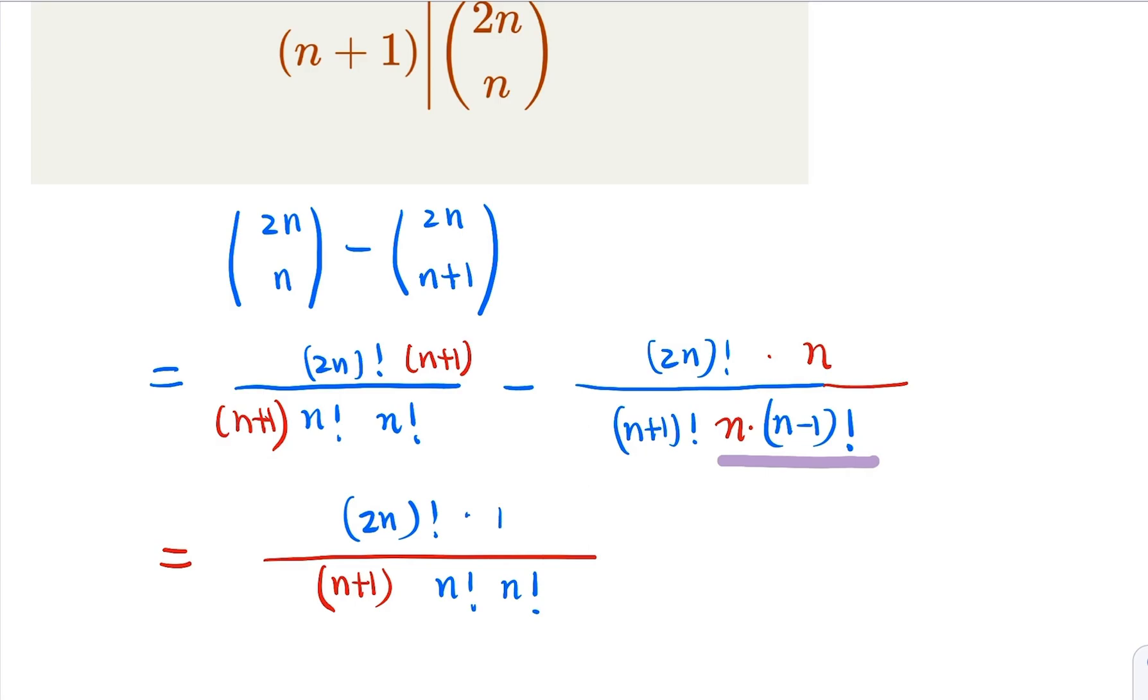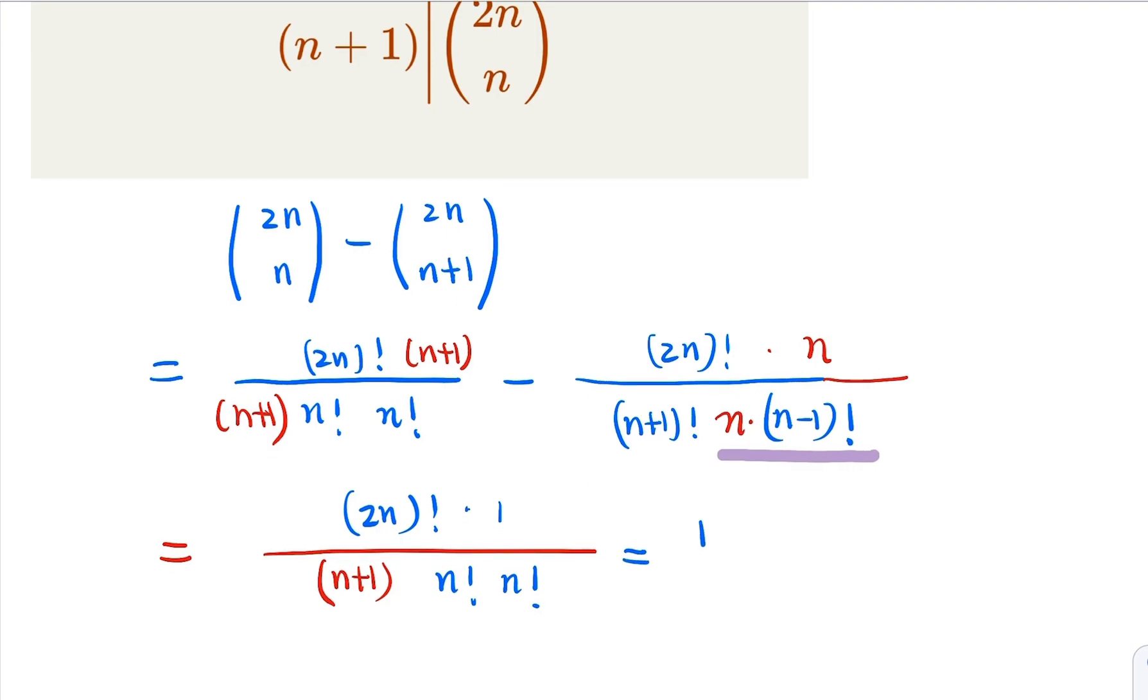So what you see here is, this is going to be 1 over n plus 1, and the other term here, 2n factorial divided by this is nothing but 2n choose n.